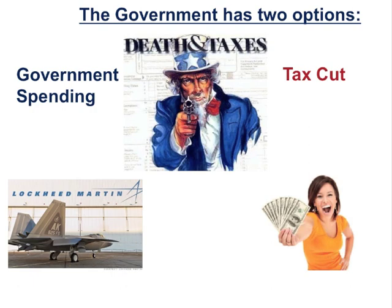The government has two options to either expand or contract the economy: increase spending or cut taxes. If they increase spending, the G component of aggregate demand is automatically activated — for example, a government contract with Lockheed Martin for military goods. That money multiplies as Lockheed Martin pays employees, who then buy things, and so on. The other option is to cut taxes and give consumers and businesses money to spend.